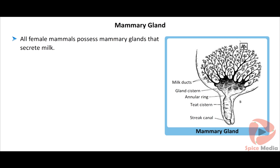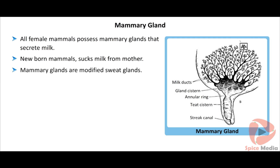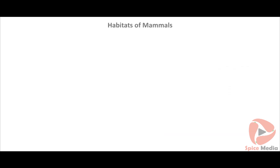Stiff hairs called quills are defense organs in porcupines and hedgehogs, which protect them from predators. All female mammals possess mammary glands that secrete milk. Newborn mammals suck milk from their mothers. Mammary glands are modified sweat glands.